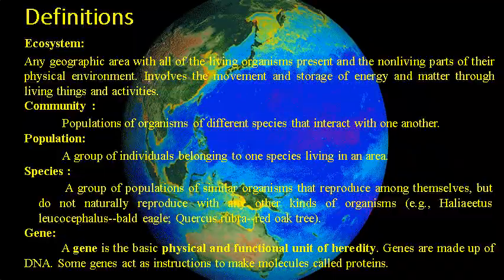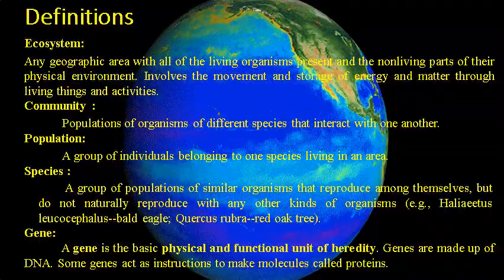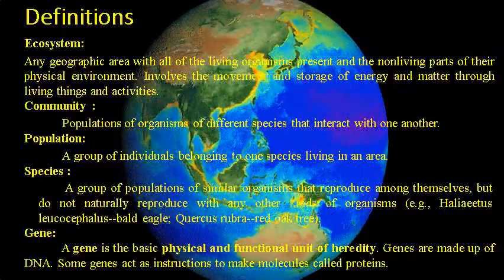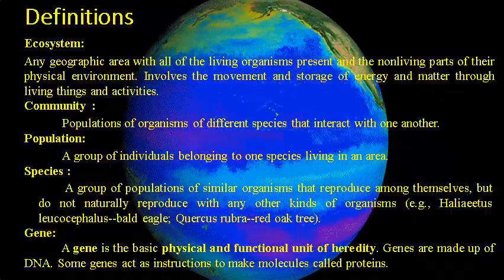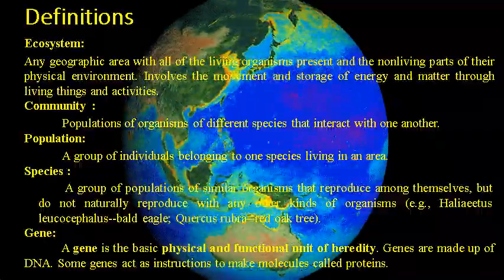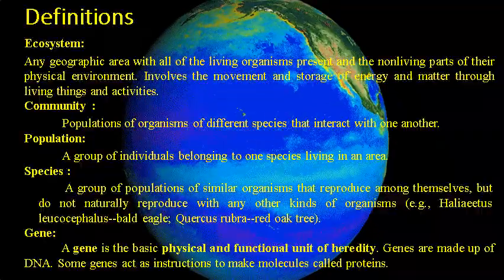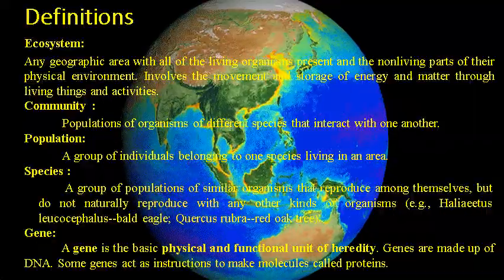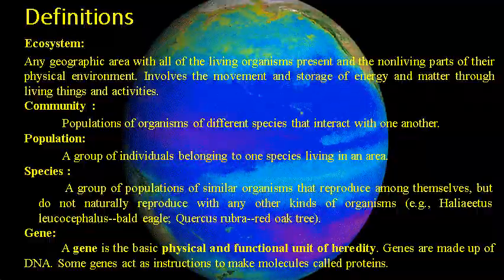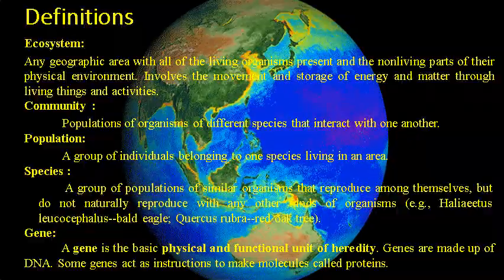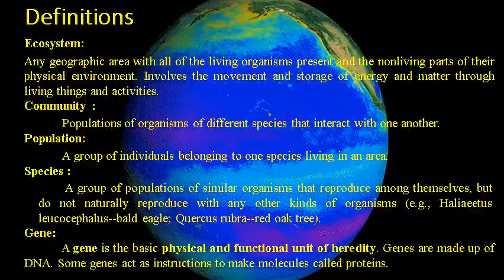Now let's move on to species. A species is a group of population of similar organisms. A species is often defined as a group of individuals that actually could potentially interbreed in nature. In this sense, a species is the biggest gene pool possible under natural conditions. Some examples given here are wild eagle and red oak tree.